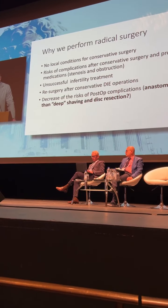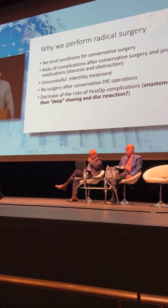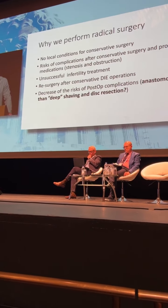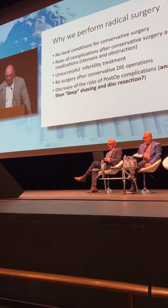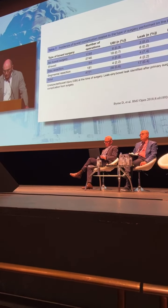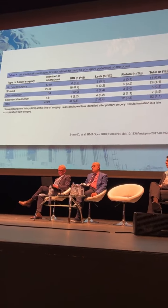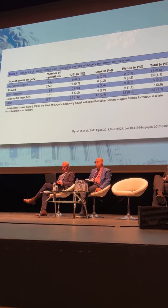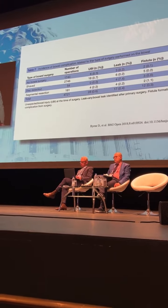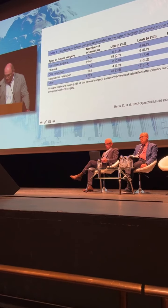We perform radical surgery in cases of unsuccessful infertility treatment and after previous conservative surgery — shaving or discoid resection. In my opinion, anastomosis is better than deep shaving and disc resection. I found a very interesting publication in BMJ Open in 2018 confirming that the risk of anastomosis complications in the segmental resection group was three times less than in the shaving and disc resection group: 10% complications in the conservative group versus 3.9% in the radical group.